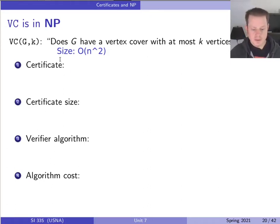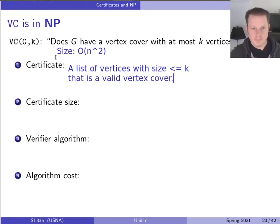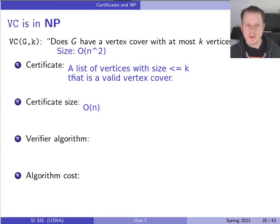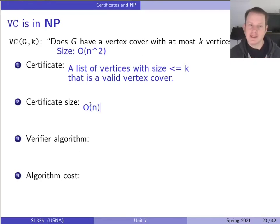So the certificate for this is just going to be a proposed vertex cover. Specifically, the certificate will be a list of vertices of size at most k that is a valid vertex cover. The size of this certificate is clearly O(n), because there are n vertices in the whole graph, so there are at most n vertices in a valid certificate. That's important, because for some problems it's possible to verify if you could have a certificate that's exponentially large — like listing out all possible vertex covers — which wouldn't make sense as a fast verification.